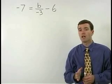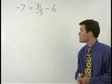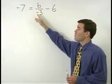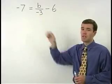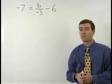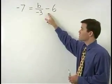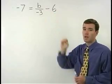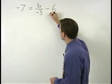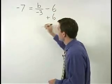First, isolate the term containing B, which in this case is B over negative 3. To isolate B over negative 3, we must get rid of this minus 6. And we do that by adding 6 to both sides of the equation.